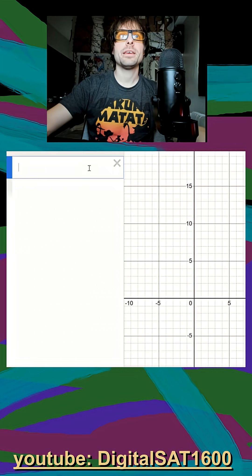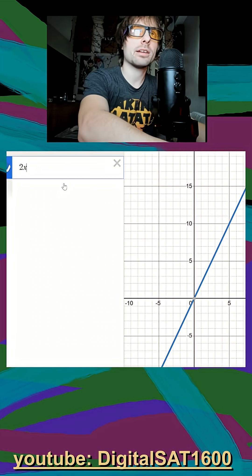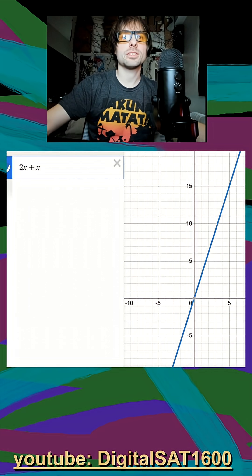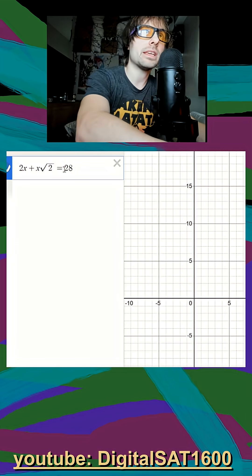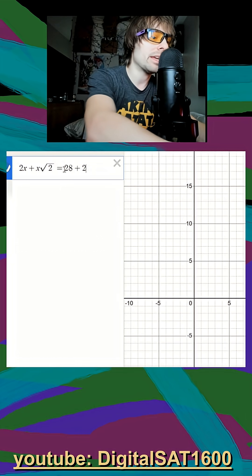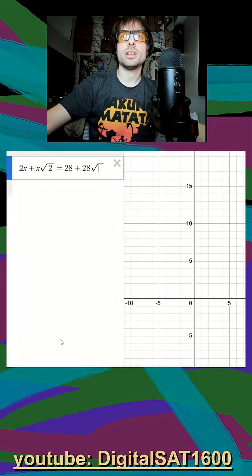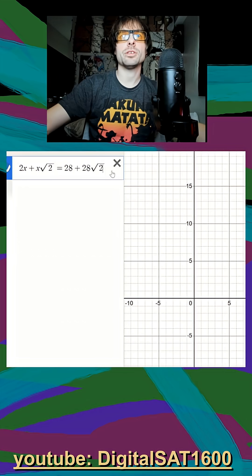So we pull up Desmos here, and I type in my 2x plus x square root of 2. And I set it equal to 28 plus 28 square root of 2, right? Yep, square root of 2.